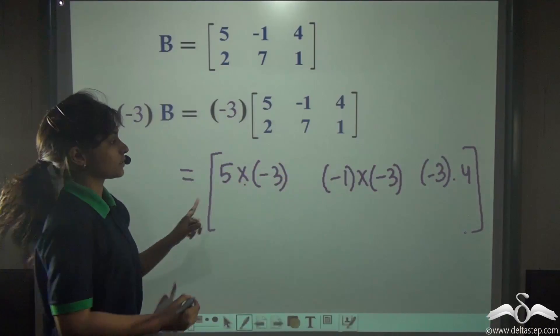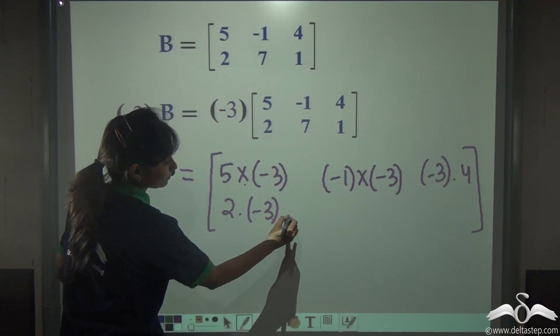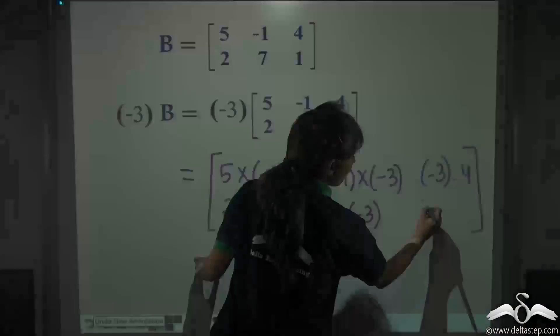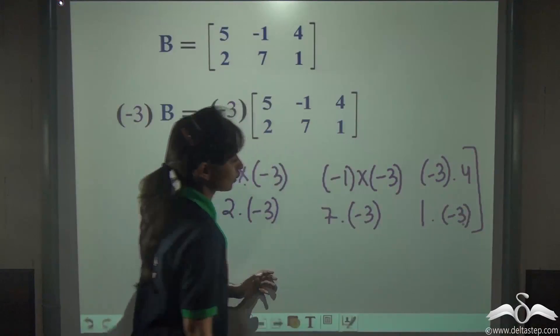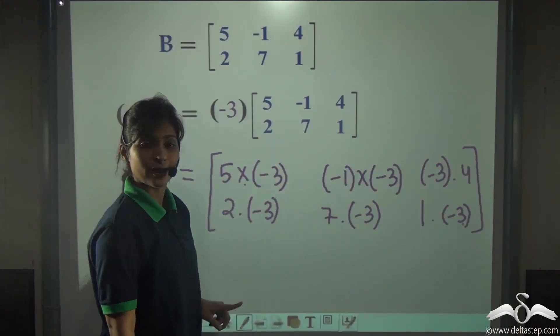So from now on, we will use the dots. 2 into minus 3, 7 into minus 3, 1 into minus 3. Now, simply what we will do? We will multiply each entry here and write down the answer.